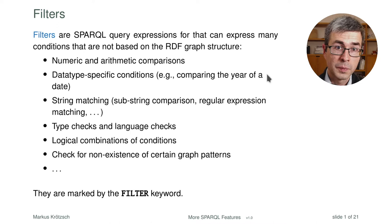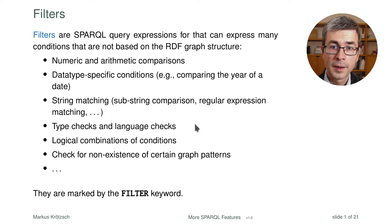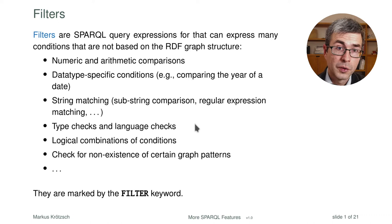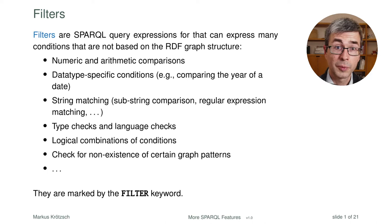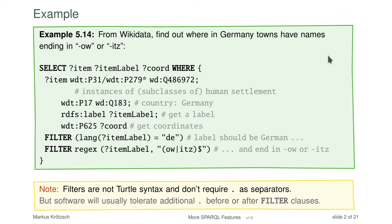It makes sense to have features that can look into the data value — a number, for instance — and filter out the ones we want. There are many other cases: comparing the year of two dates, string matching, regular expression matching, checking the type of something, language checks for literals, logical combinations, and even checking the non-existence of patterns. All of this is one feature and it's fairly easy to use — it's a SPARQL filter.